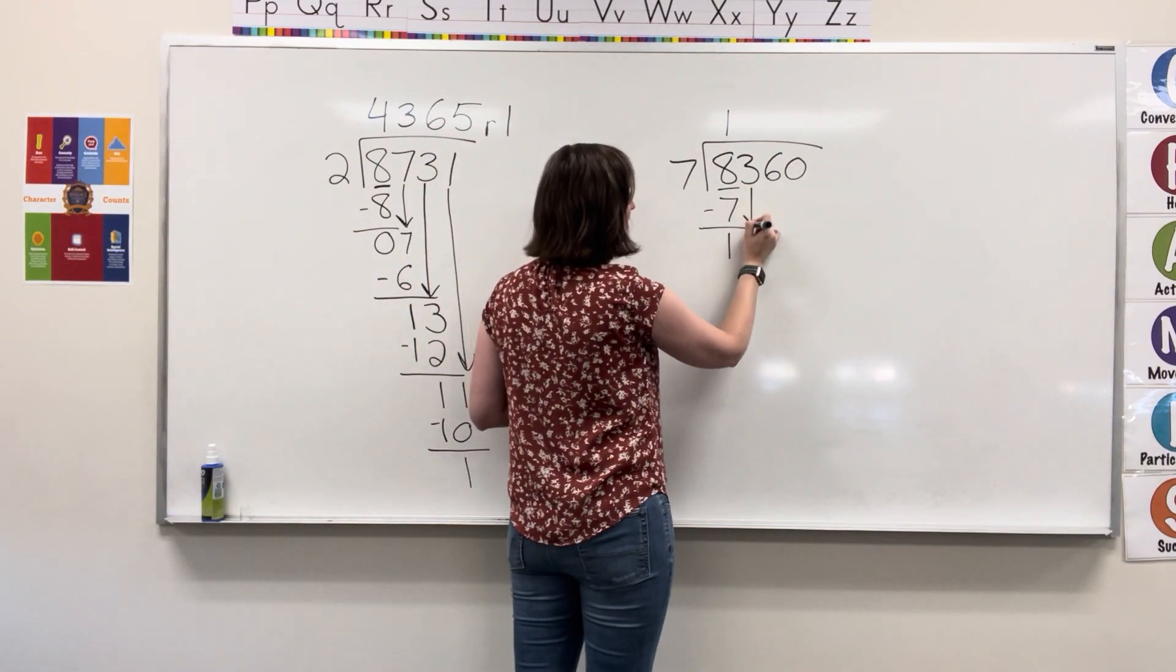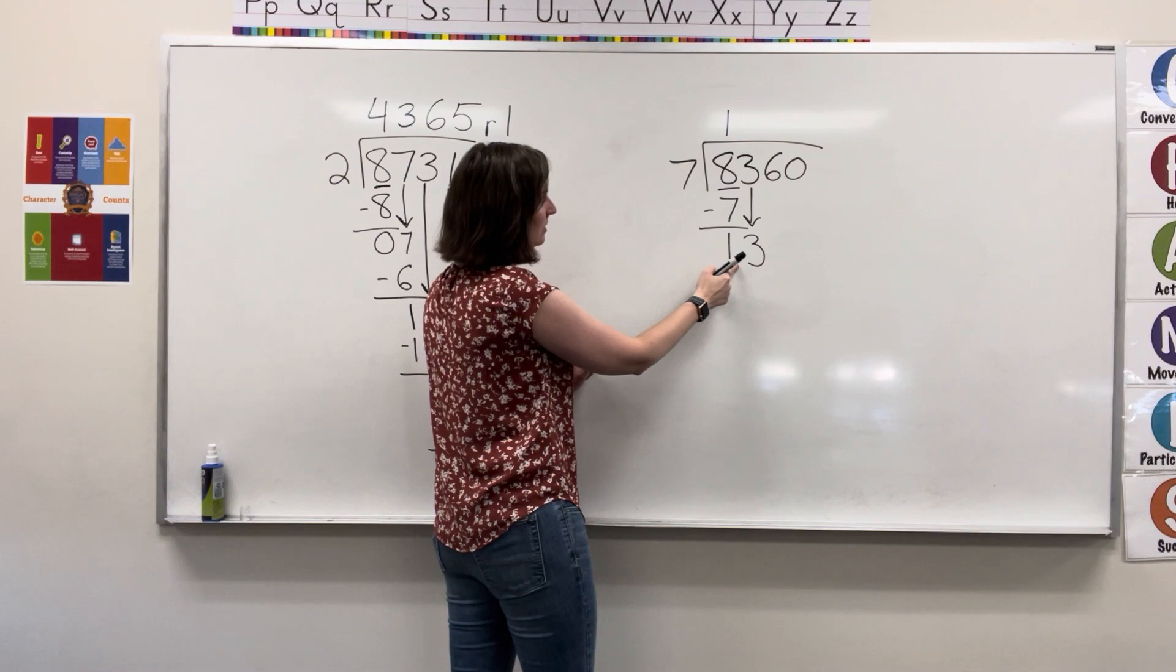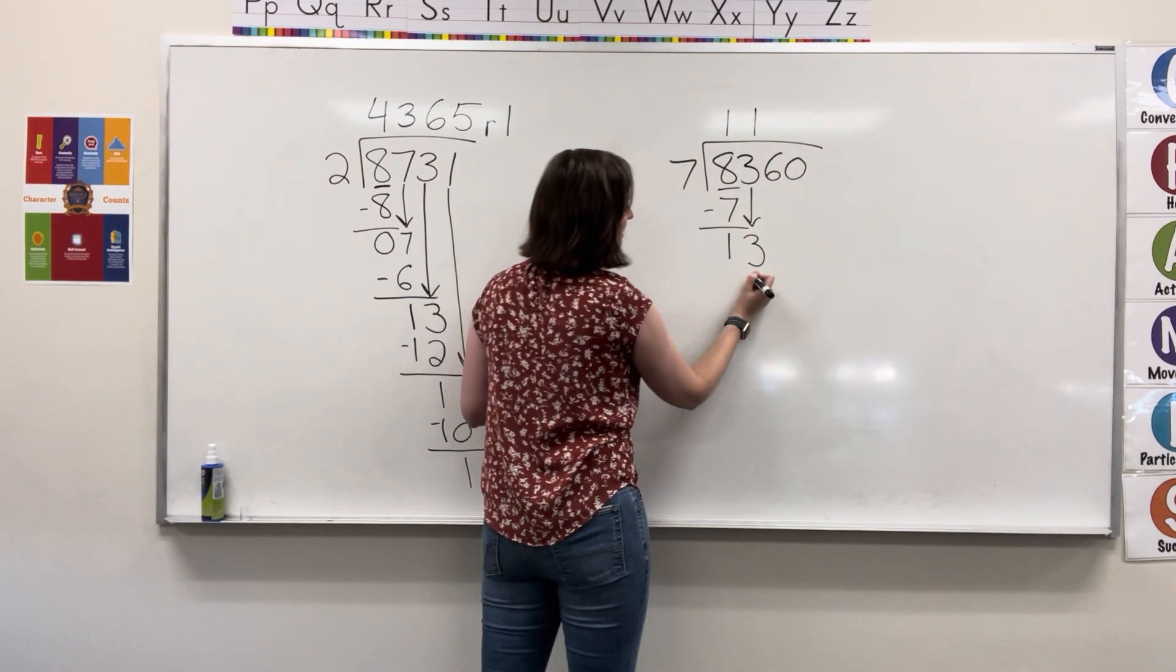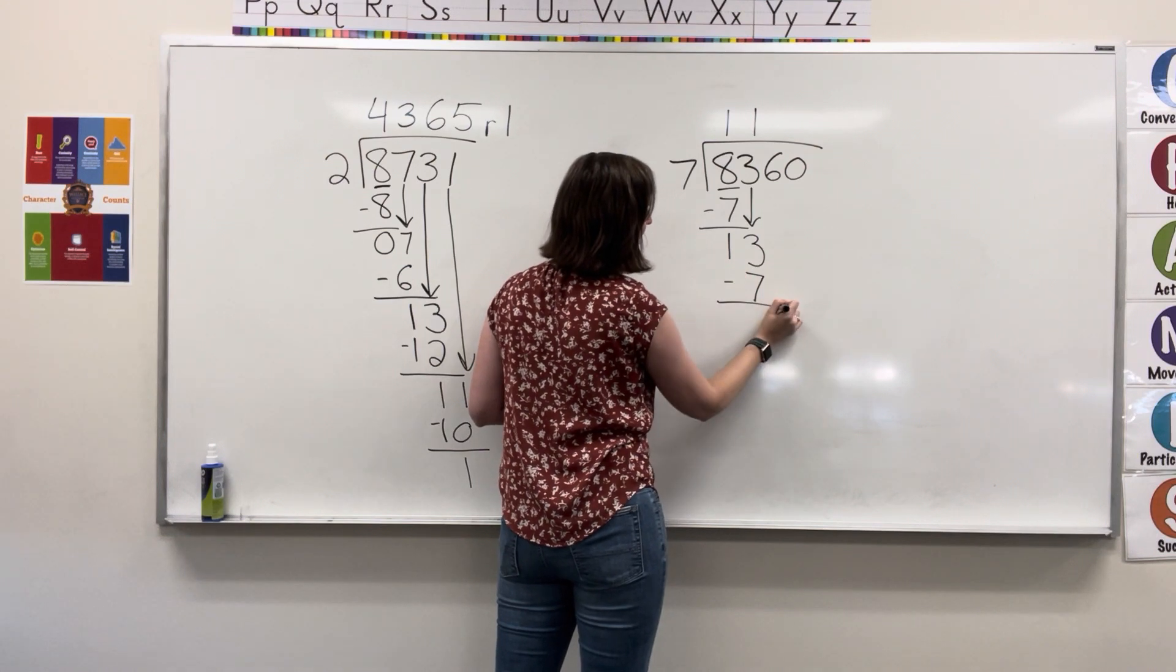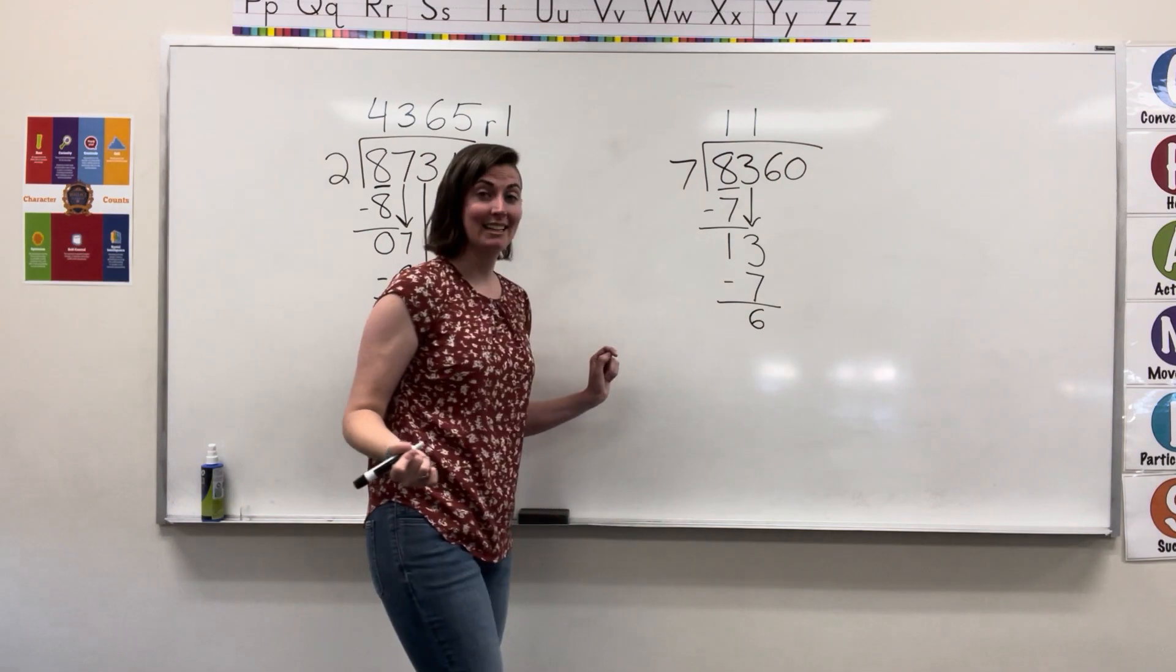Bring down the three. Seven goes into thirteen one time. One times seven is seven. Subtract and I get six.